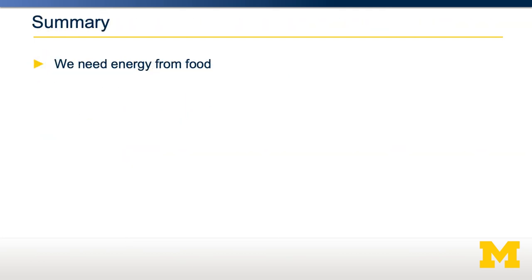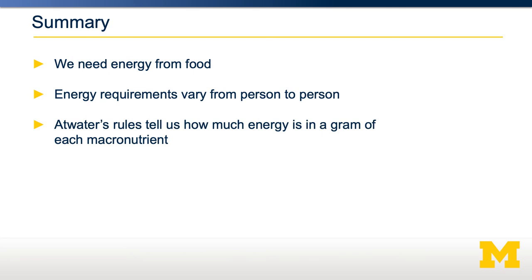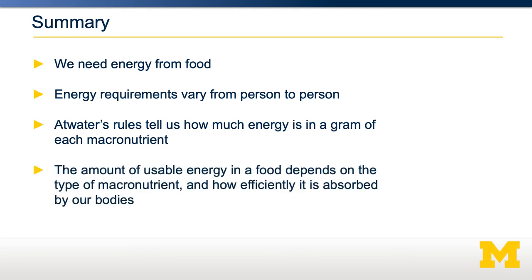In summary, we need to get energy from our foods to maintain normal bodily functions. Consumption of too much energy can result in obesity, while too little leaves us without enough energy to adequately perform daily tasks. Energy requirements vary from person to person, but recommendations are 2,000 kilocalories per day for an average woman and 2,500 for a man. Atwater's rules convert grams of macronutrients into energy, with alcohol and fat having the highest energy per gram and fiber the lowest. The usable energy in a food depends on both the macronutrient type and how efficiently it is absorbed.